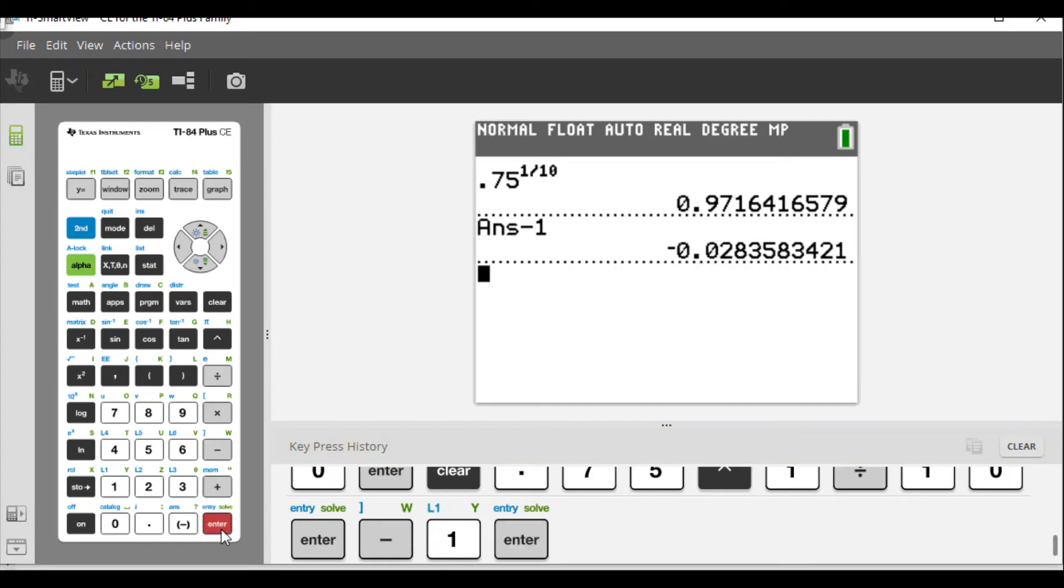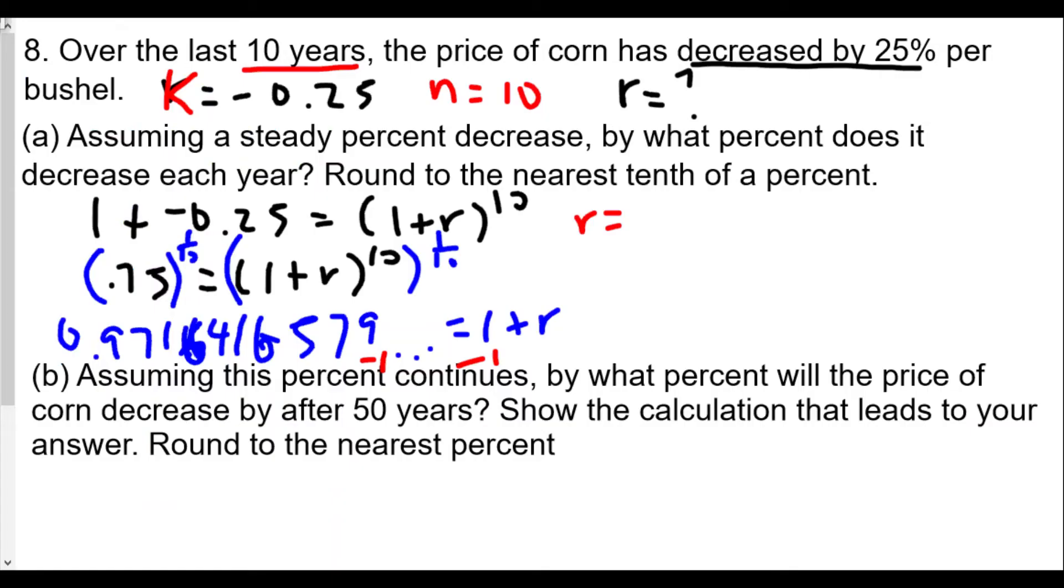And we're going to see in this case a value of negative 0.0283583421, and this would be the decrease in the rate. So negative 0.0283583421.